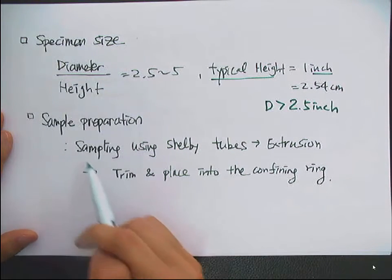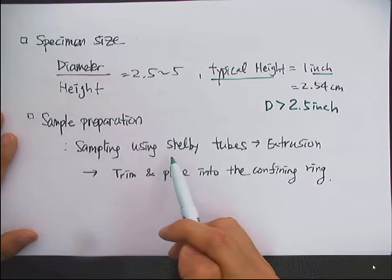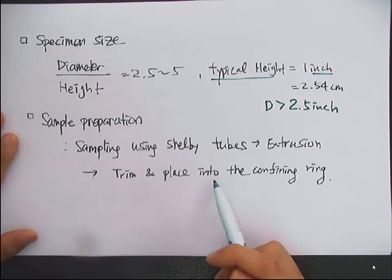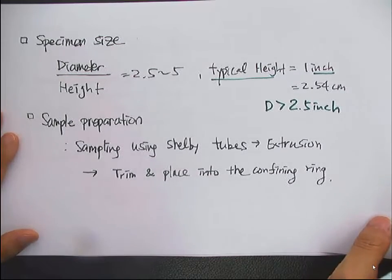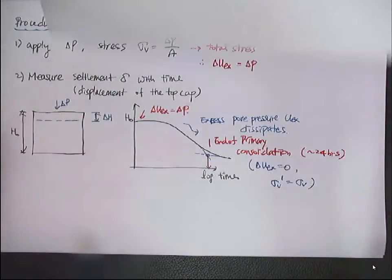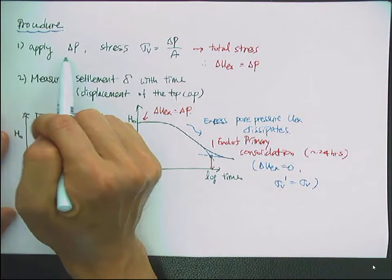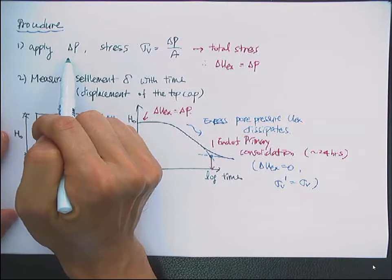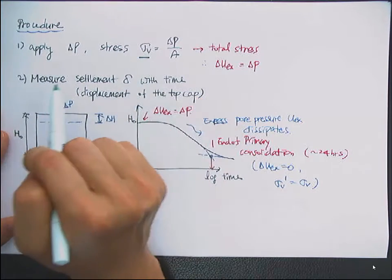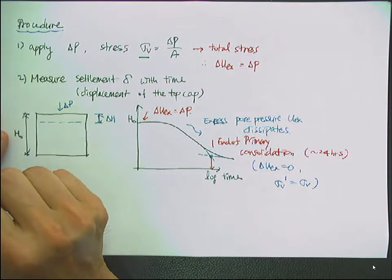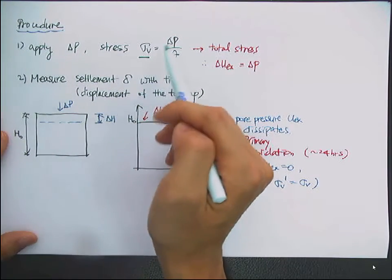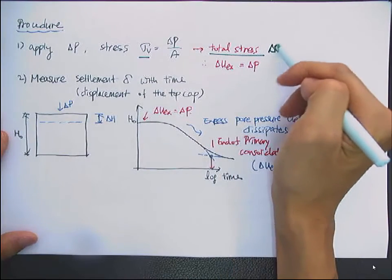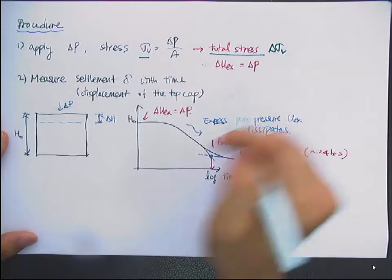For sample preparation, you do the sampling using the Shelby tube, then do the extrusion and trimming. The procedure is like this: you apply the force — the dead load — on the top of the specimen, and you can calculate the vertical effective stress from the load by dividing by the area: delta P over A. So then you have a total stress increase by delta sigma V prime.